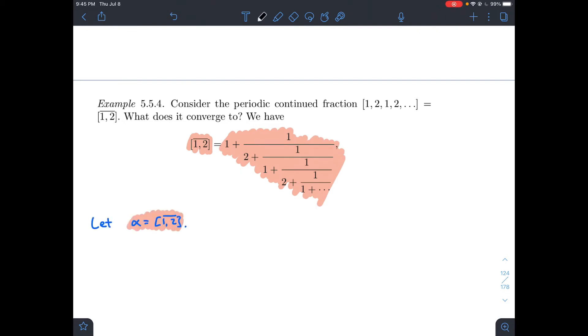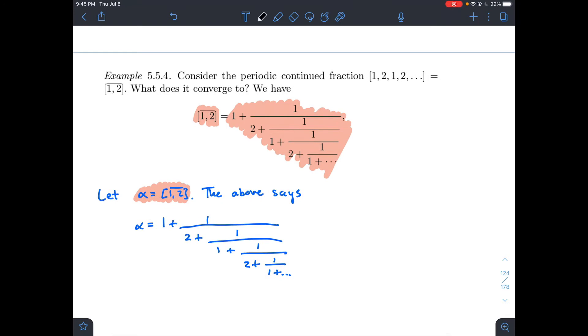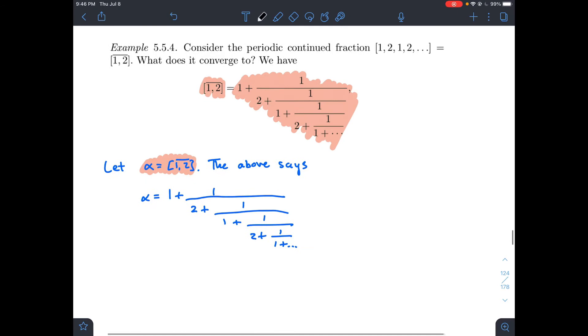What does the above say? The above says that alpha equals 1 plus 1 over 2 plus blah, blah, blah. The thing I want to notice is this fraction goes on forever.